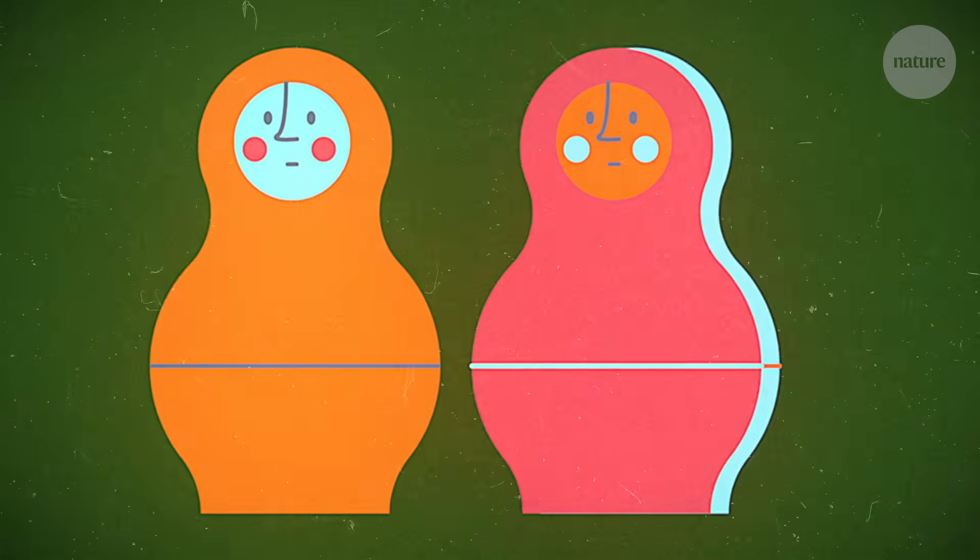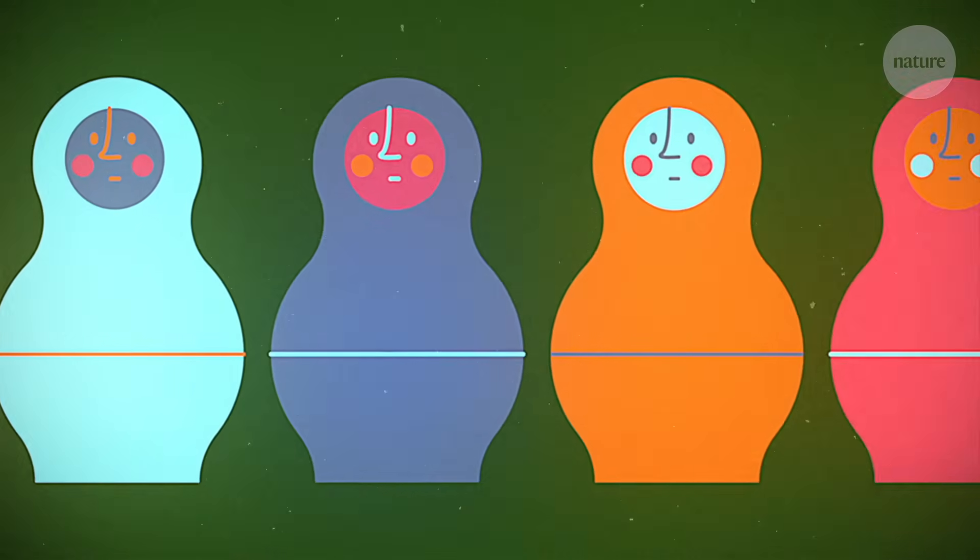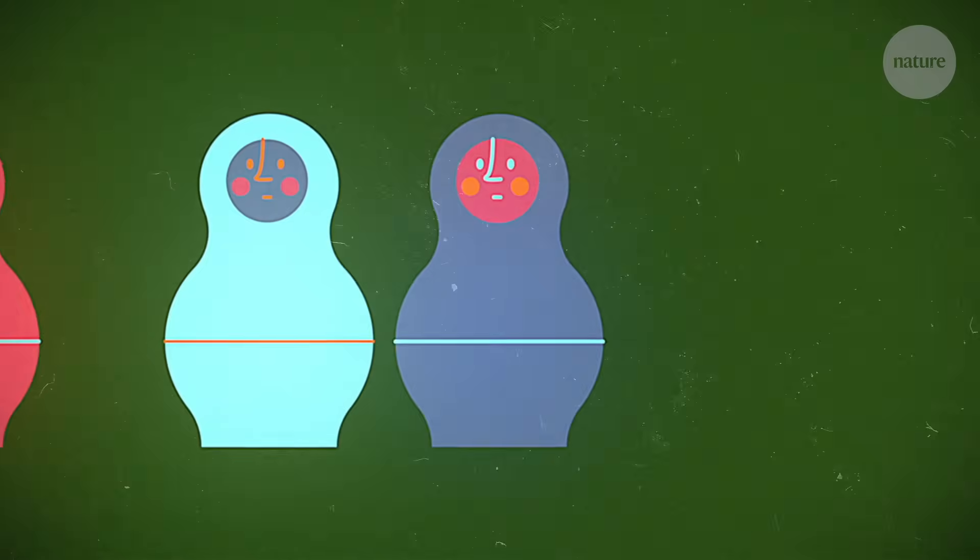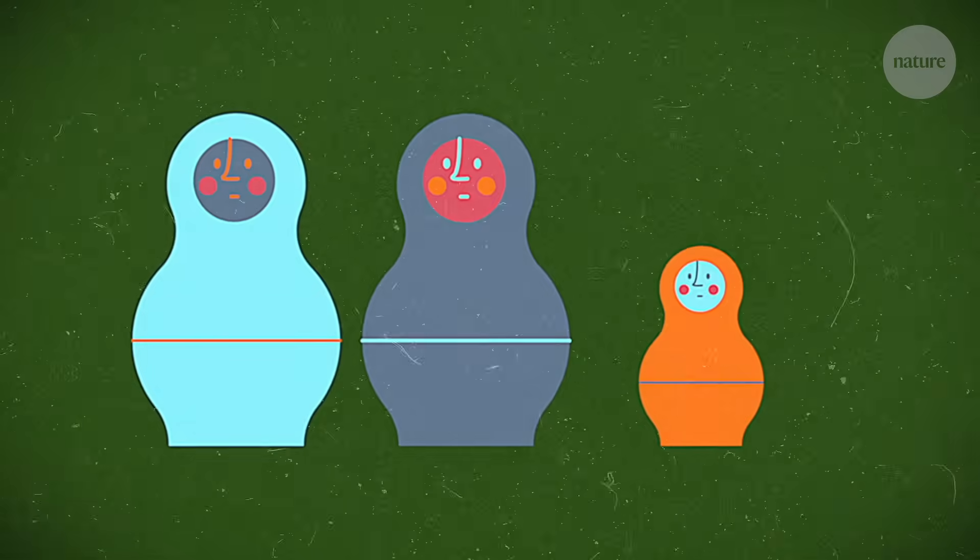Geneticists have long been interested in how fast our DNA is changing to help us understand things like genetic diseases and human evolution. One way of doing that is to compare genomes within a family. When a child is born, they have new mutations that are not in either mom or dad that are specific to that child.